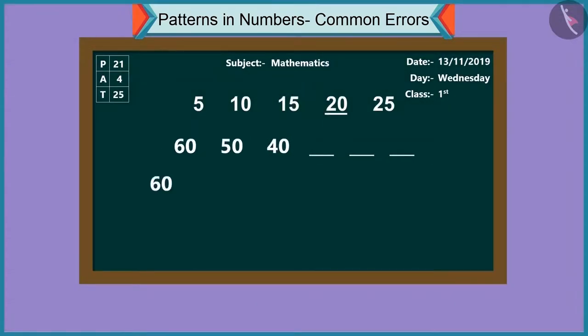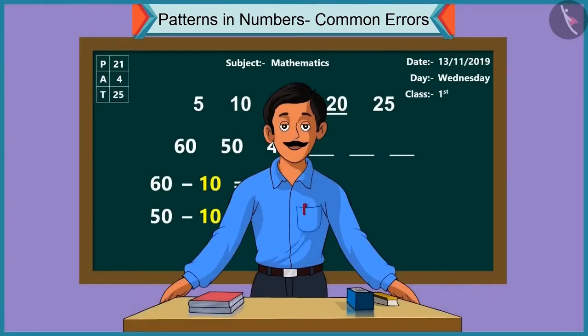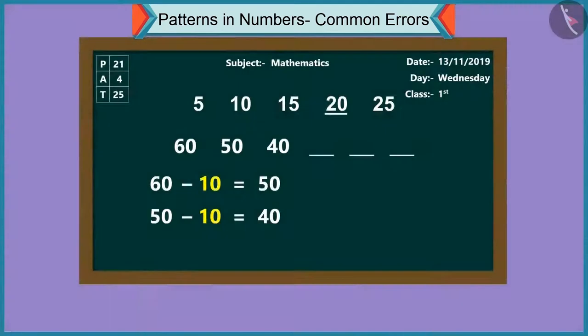Let's understand this pattern. In this pattern, subtracting ten from sixty, we get fifty. Subtracting ten from fifty, we'll get forty. Similarly, subtracting ten each time, we proceed with this pattern. Can you try now?